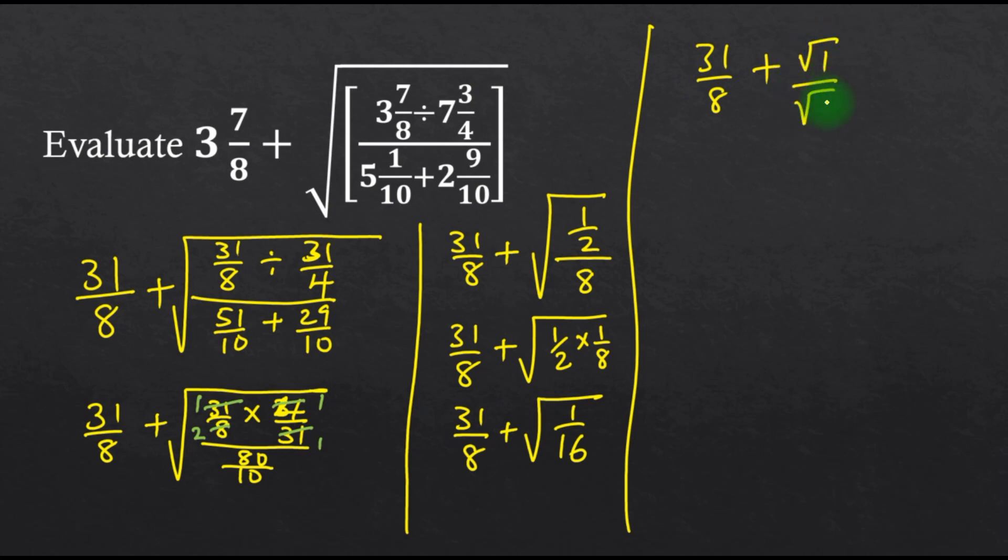Since they are still under the same square root, we have 31 over 8 plus... the square root of 1 is 1, the square root of 16 is 4, so one-quarter.